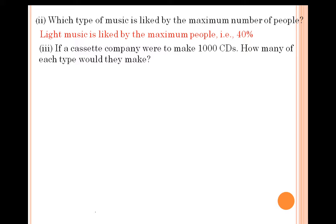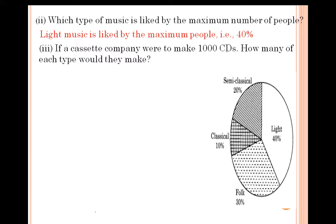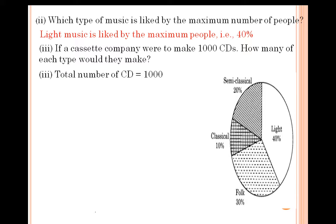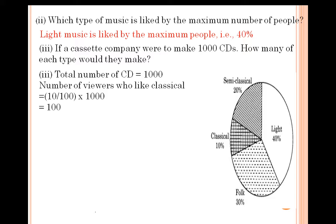Next: if a cassette company were to make 1000 cassettes of these different types of music, how many of each type would they make? The pie chart shows 40% for light, 20% for semi-classical, 10% for classical, and 30% for folk. Total number of CDs equals 1000. For classical music, which is 10%, we find 10% of 1000: that is 10 upon 100 into 1000.